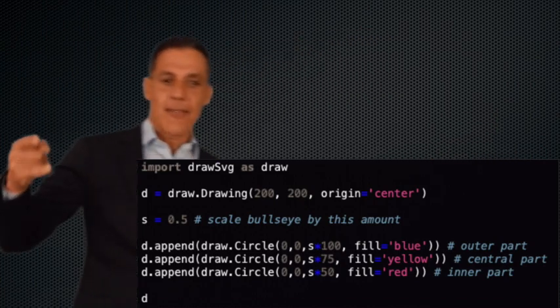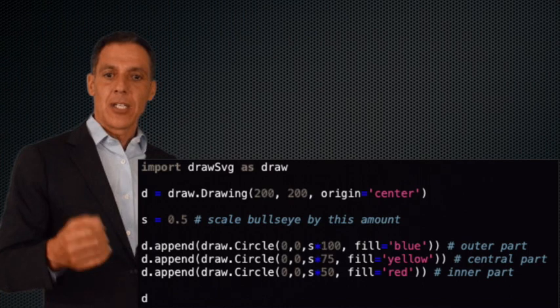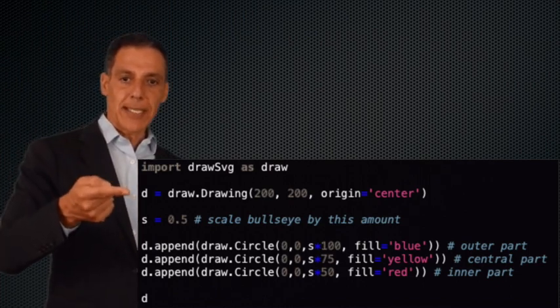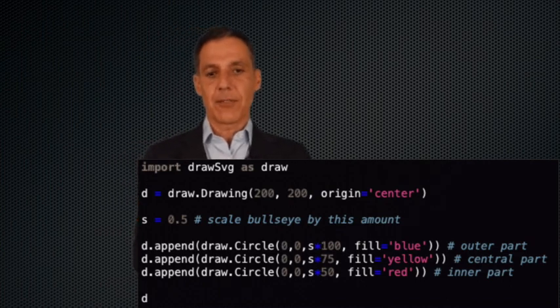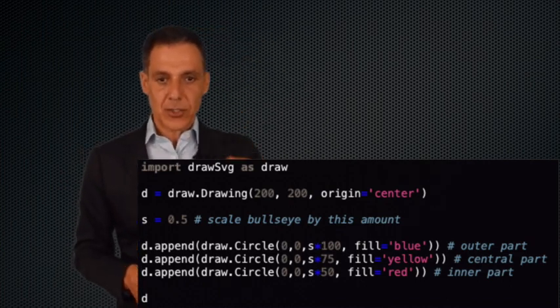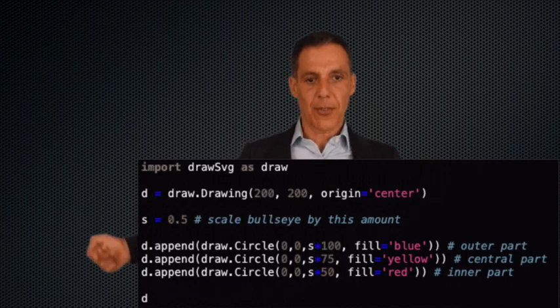My bullseye is made up of three circles. d, which is my canvas, dot append, please splat onto the canvas a circle, a circle, a circle. The first one is blue. The second one is yellow. The third one is red.